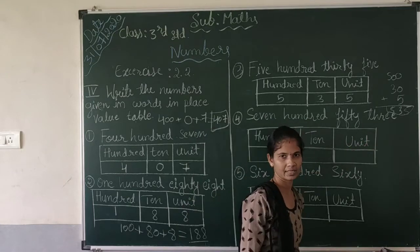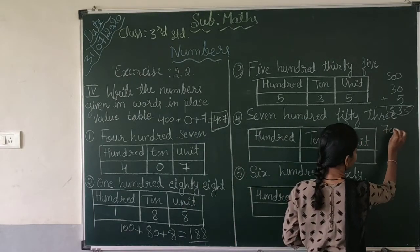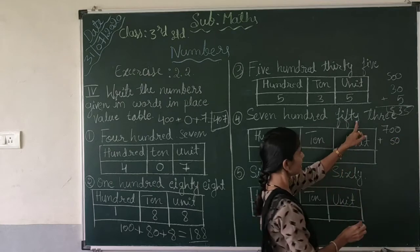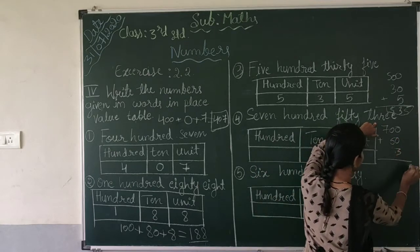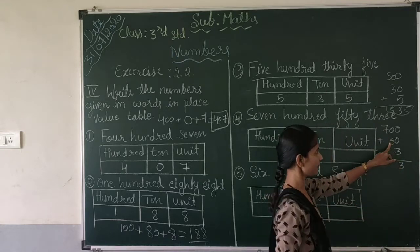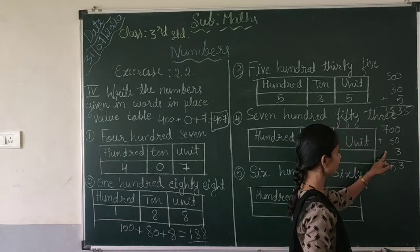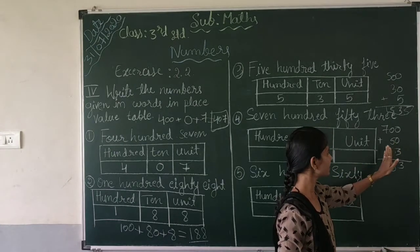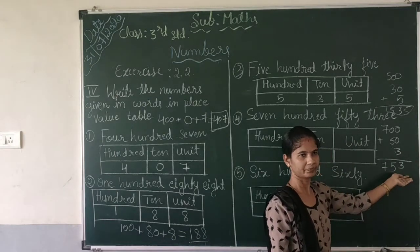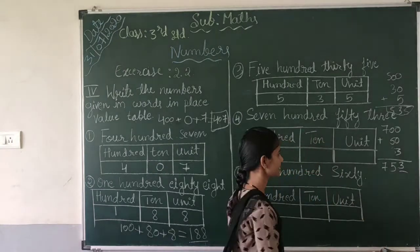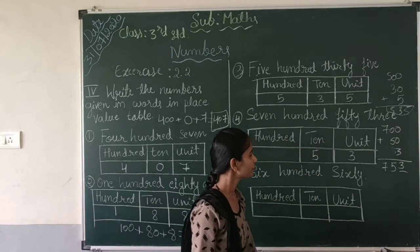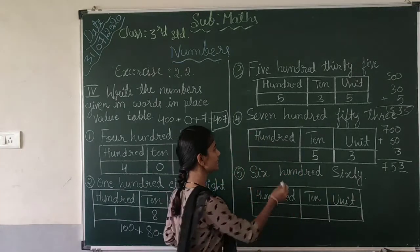Fourth one: seven hundred fifty-three. Seven hundred plus fifty plus three. Zero plus zero plus three is 3; zero plus five is 5; seven is in the hundreds. Total number is 753. Three is in the units place, five is in the tens place, and seven is in the hundreds place.